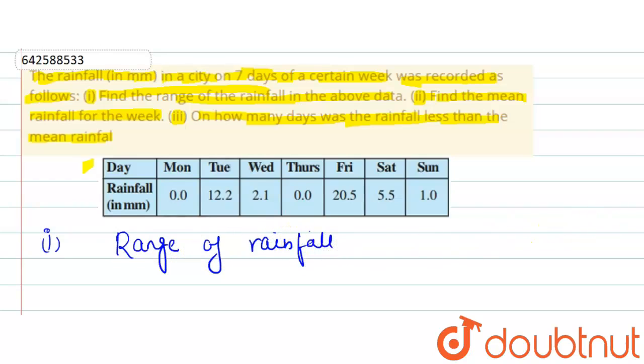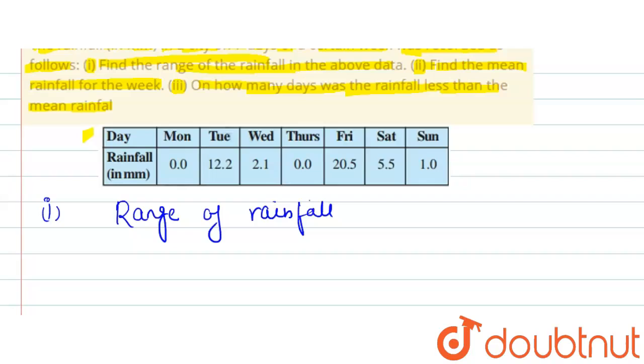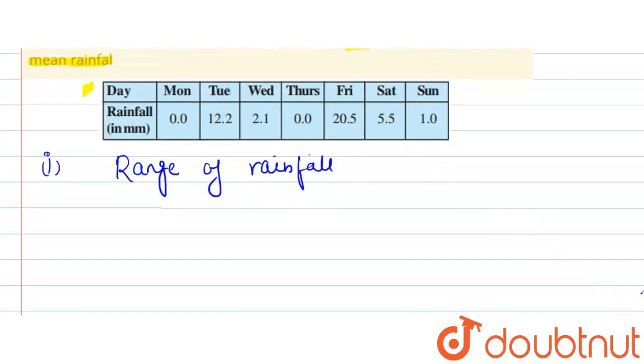The range is given by maximum observation minus minimum observation.